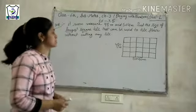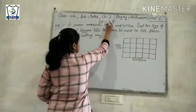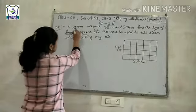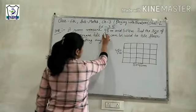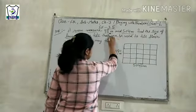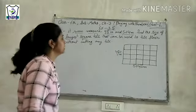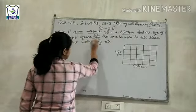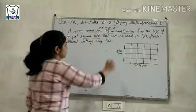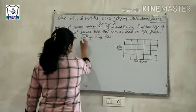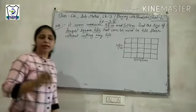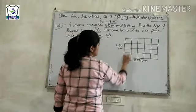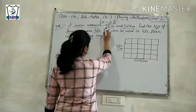6th class math, Exercise 3.5, we will do the 10th question. A room measures 4.8 meters and 5.04 meters. Find the size of the longest square tile that can be used to tile the floor without cutting any tile. We will cut no tile here, and without cutting, this room is 4.8 meters.